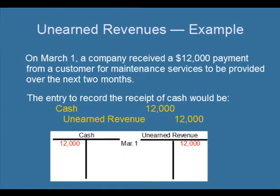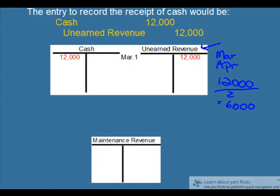Now, if a company wanted to prepare financial statements at the end of March, we have to look at this unearned revenue account to determine if we have earned any of the money. That $12,000 was received for services that would be completed in March and April. So if we take that $12,000 and divide it by two, we would get $6,000. So $6,000 is the amount that the company would be earning each month. When we go to prepare financial statements at the end of March, we would have to make sure that this unearned revenue account doesn't include any of the money that we earned.